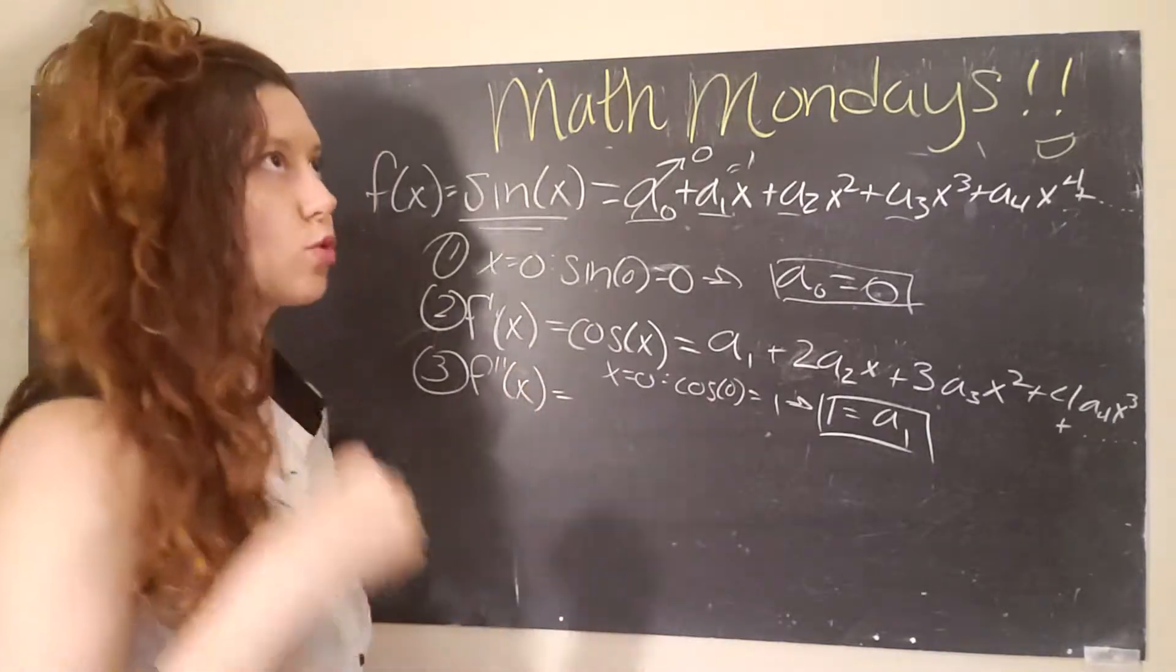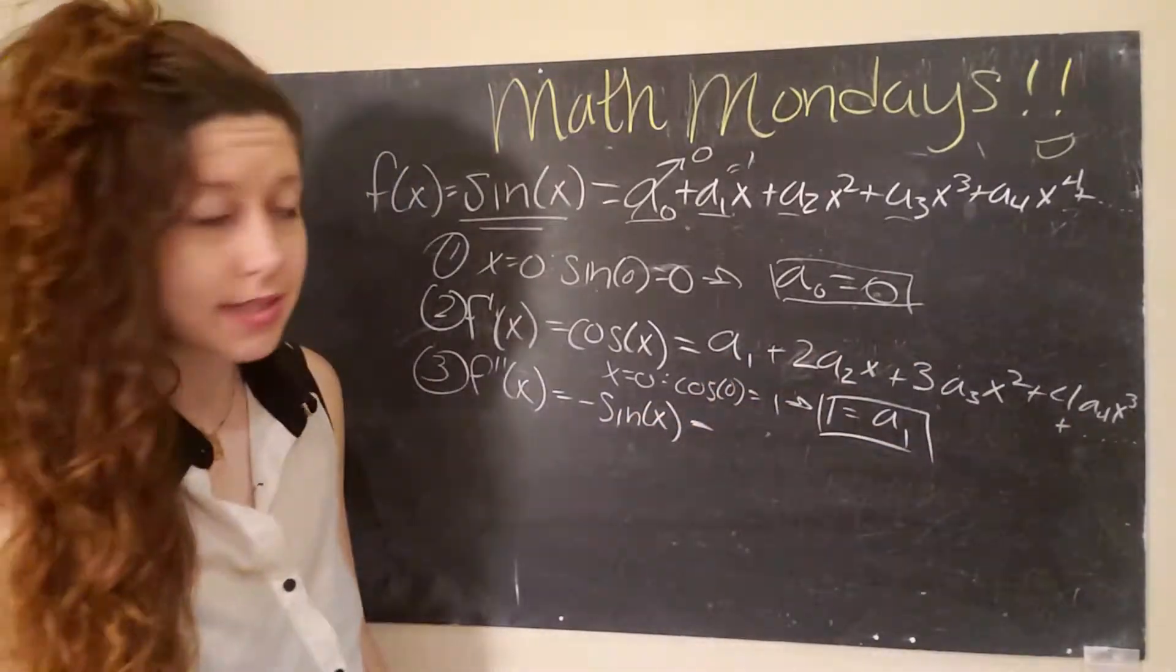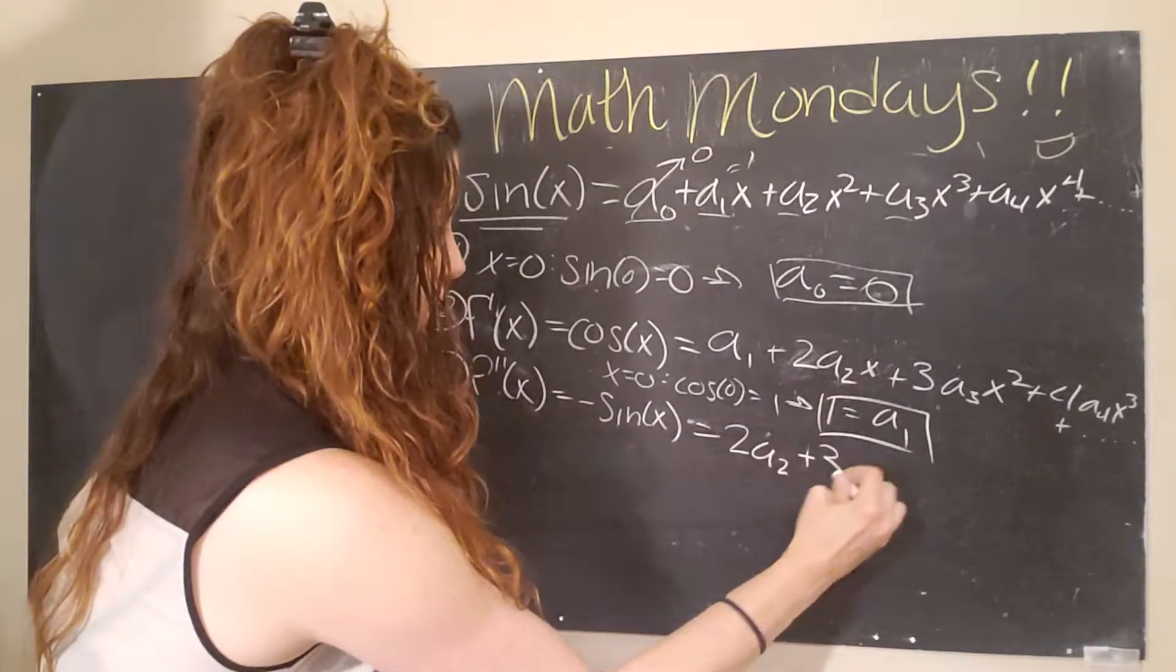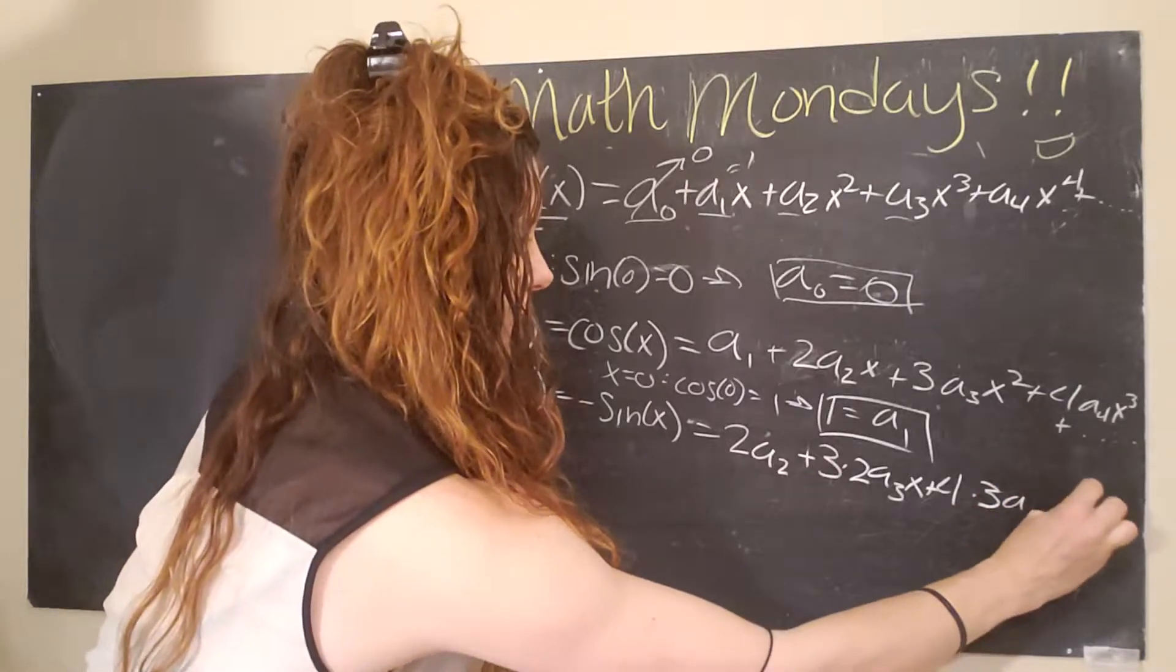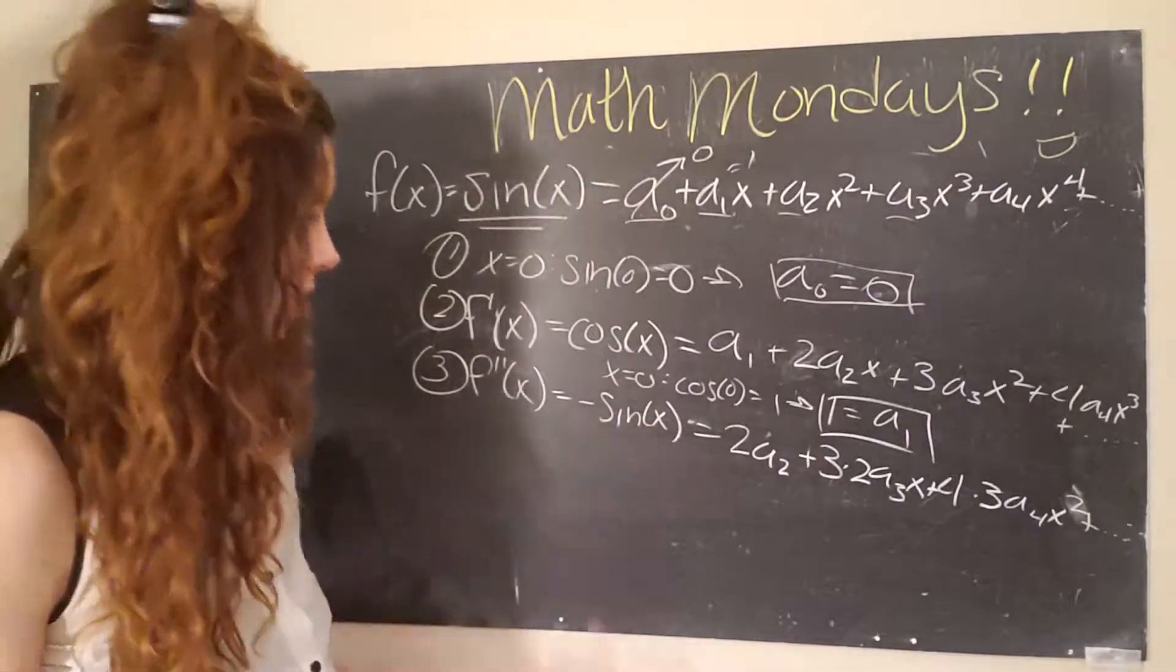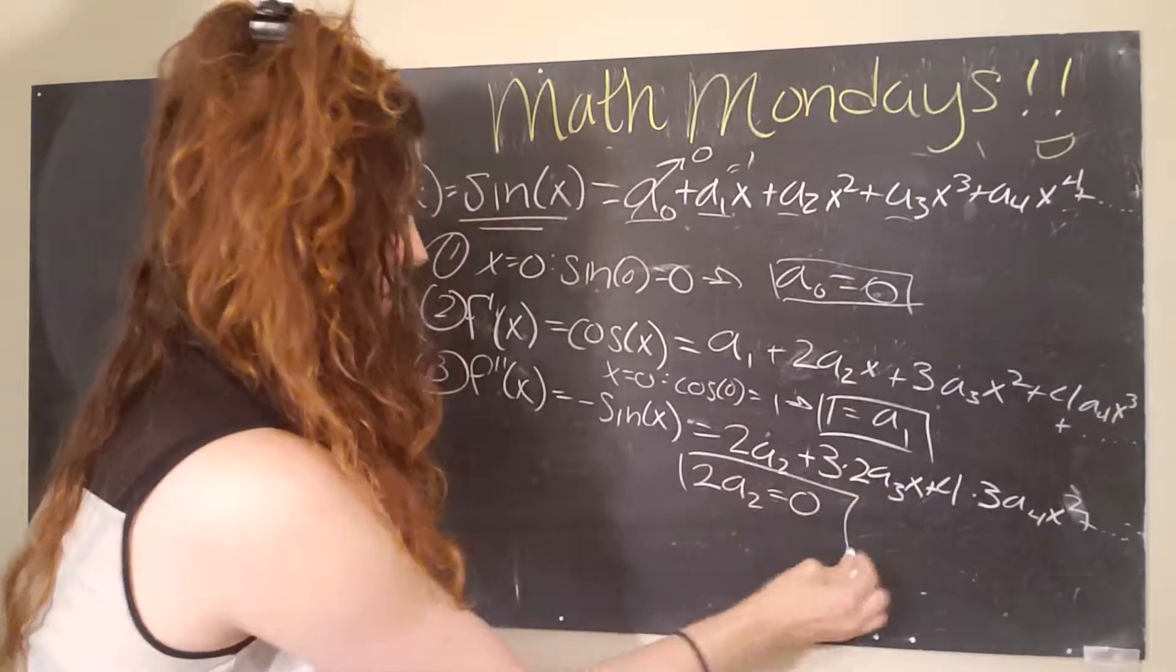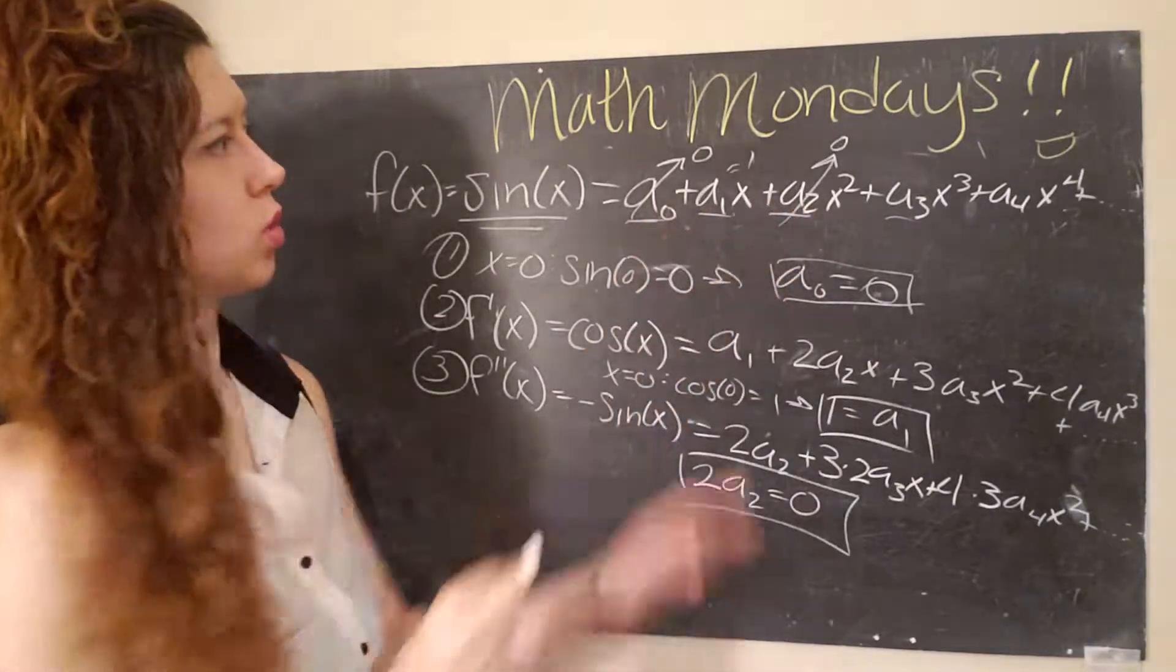And we do the same thing again. We take the second derivative, f double prime of x equals the derivative of cosine of x is negative sine of x. And we take the second derivative of the right side. Or I guess you could just say, take another derivative of the right side with respect to x. All the constants go to zero. So you get two a two plus three times two a three x plus four times three a four x squared. And again, we apply our same condition, x equals zero, the left side goes to zero. And so we have all of these terms go to zero. So now we know that two a two must also equal zero. Oh, look at that. Okay, that's interesting.